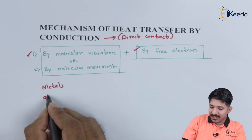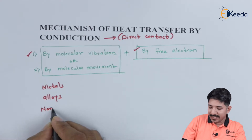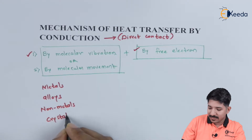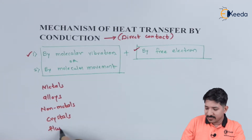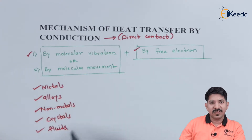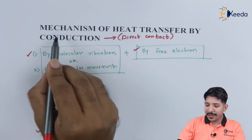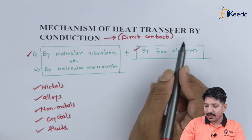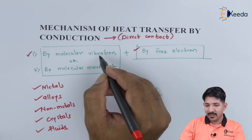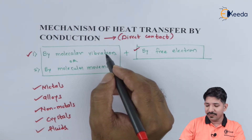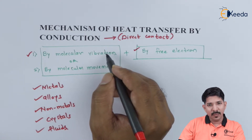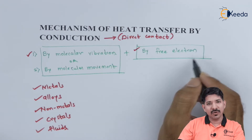then alloys, few non-metals, crystals, or other fluids. In these kinds of substances, the predominant mechanism of heat transfer by conduction is possible either by the free movement of the molecules, the vibrational movement of the molecules, or the free electrons of the molecules.